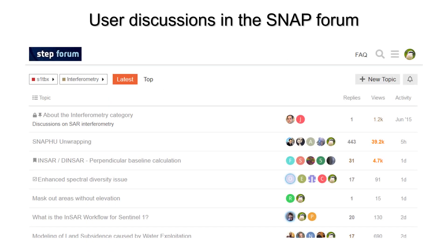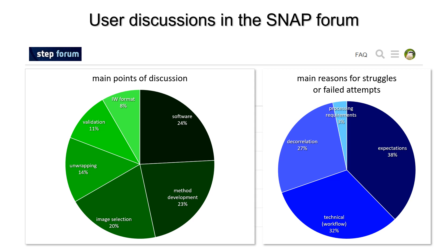To get more insights from the user perspective, over 100 topics on DEM generation in the SNAP user forum have been evaluated. The most frequent topics dealt with the correct handling of the software, the development of new methods, the selection of suitable image pairs, and the process of phase unwrapping. The main reasons for unsatisfying results were phase decorrelation over vegetated areas, technical difficulties, but also exaggerated expectations on the quality of the resulting DEMs, often triggered by supervisors who gave their students unsolvable tasks.